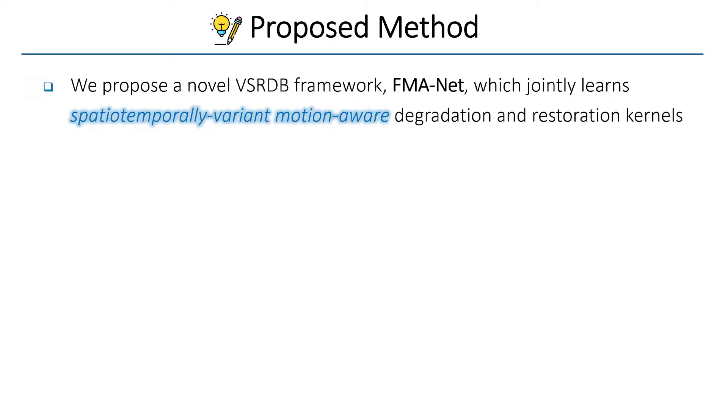We propose a joint video super-resolution and de-blurring framework called FMA Net, which jointly learns spatio-temporally variant motion-aware degradation and restoration kernels instead of directly predicting the output frames.